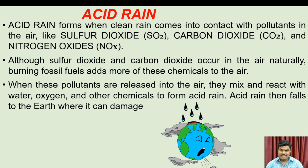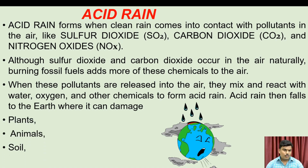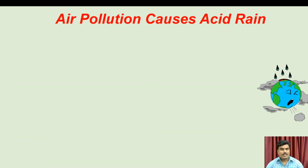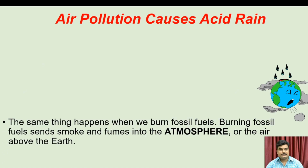Acid rain then falls to the earth where it can damage plants, animals, soil, water, and building materials. Air pollution causes acid rain.